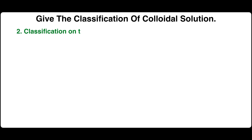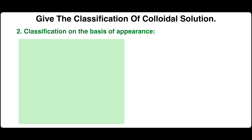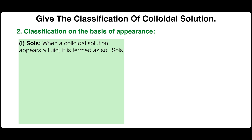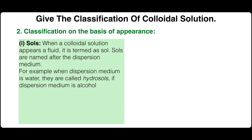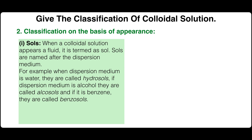Second, classification on the basis of appearance. Colloids are classified into two parts: sols and gels. When a colloidal solution appears fluid, it is termed a sol. Sols are named after the dispersion medium. For example, when the dispersion medium is water, they are called hydrosol; if the dispersion medium is alcohol, they are called alcosol; and if it is benzene, they are called benzosol.